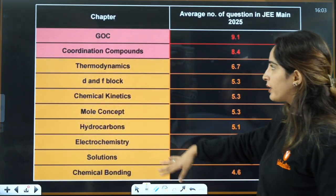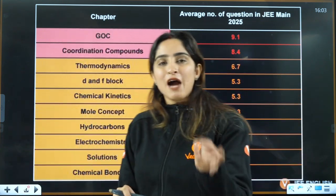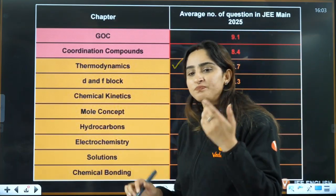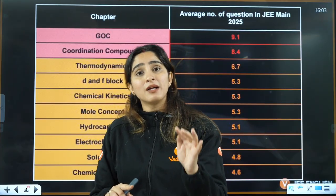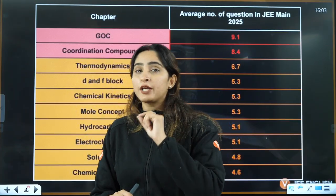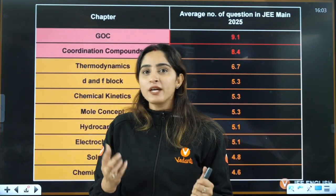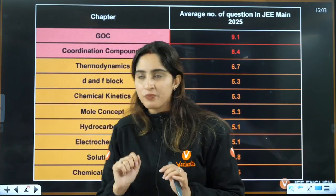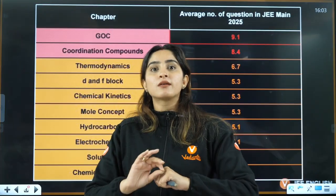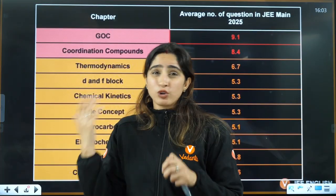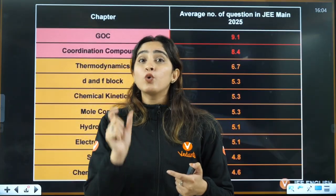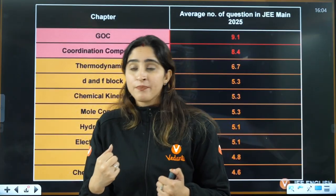From this data, high priority chapters are GOC and coordination chemistry — I advise you do everything from there, don't skip a single topic. In thermodynamics: first law, work-related formulas especially for isothermal, reversible, irreversible, and adiabatic processes, thermochemistry, Gibbs-Helmholtz equation, ΔH and ΔU relations, and heat capacity — cover all topics. For d&f block, NCERT is your bible; go through it to be risk-free.